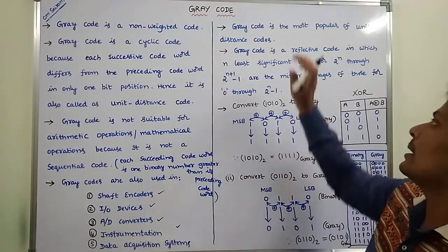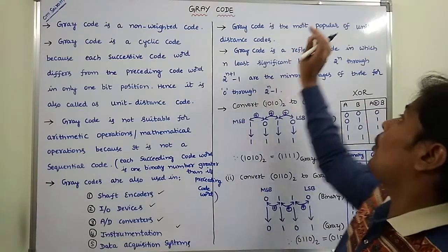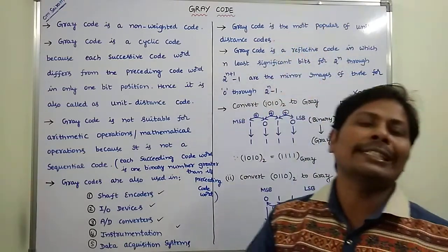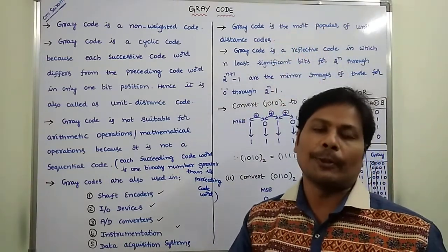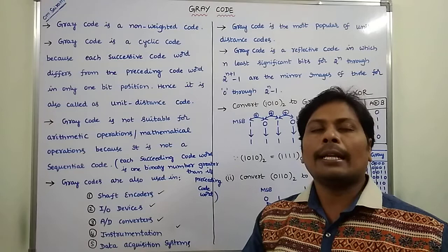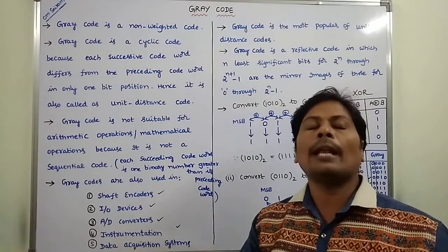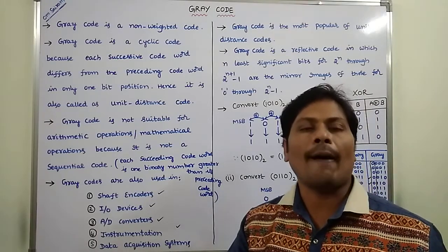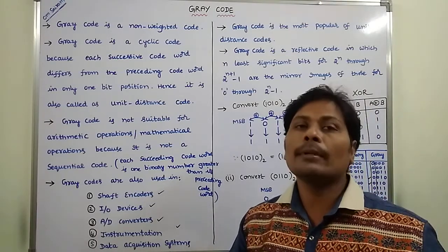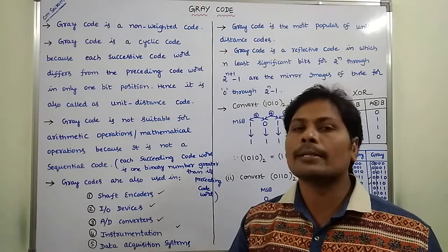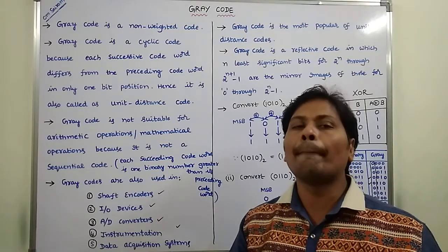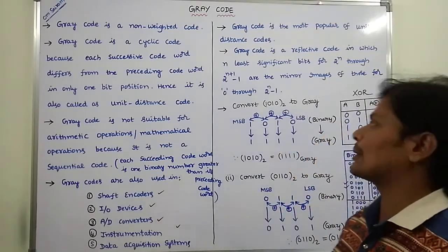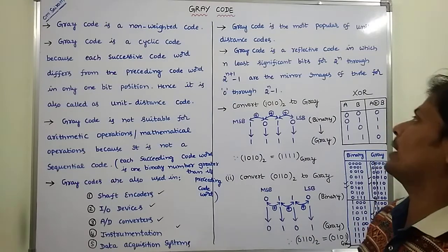Grey code is the most popular of unit distance codes. There are several unit distance codes, and among them, grey code is the most important type of unit distance code.